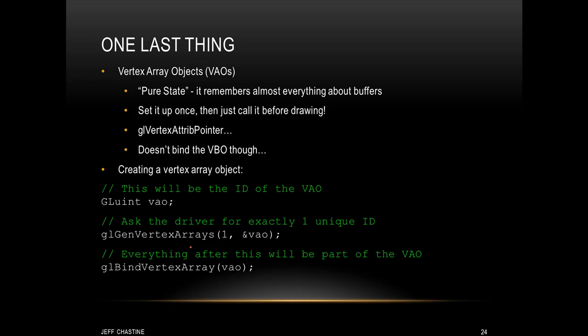If you want to see an example of what that would look like code-wise, you can see these three lines of code here. In the first line, we declare a variable. In the second line, you call glGenVertexArrays — in this case, we want to create exactly one unique ID. And then in the third line, we call glBindVertexArray. From that point on, anything that we do with glVertexAttribPointer is remembered by the VAO.